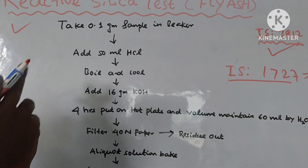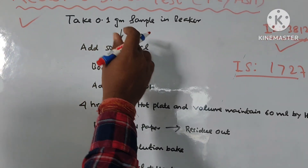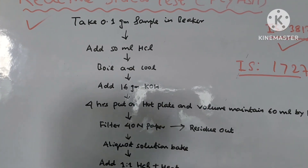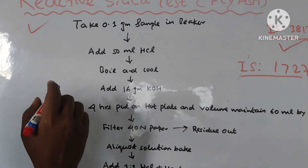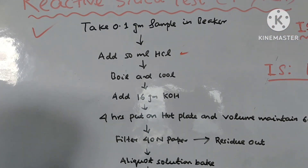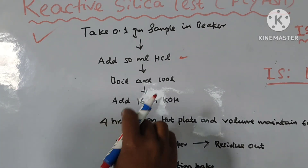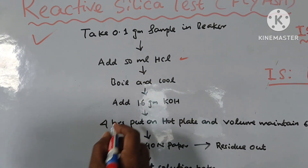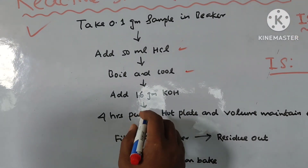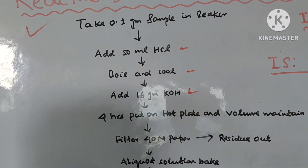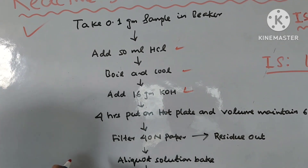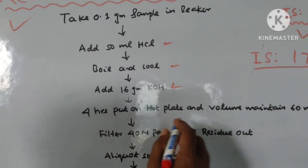First step: take 0.1 gram sample in the beaker. Then add 50 ml HCl — hydrochloric acid — to this 0.1 gram sample. Then boil and cool. After that, add 60 gram KOH to that solution.